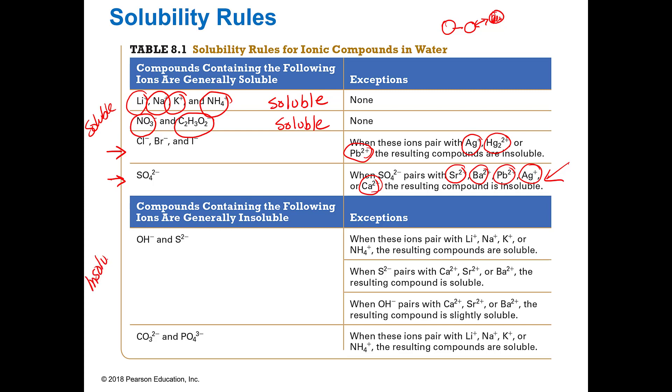This is the insoluble part of the table. So hydroxides and sulfides are almost always insoluble unless they are with sodium, lithium, potassium, and ammonium, which we know is always, right? It could also be soluble if it's with calcium, strontium, or barium. So it's really weird because strontium and barium with sulfates make them insoluble, but with a sulfide it makes it soluble. Go figure. And hydroxides are typically somewhat soluble anyway with calcium, strontium, and barium.